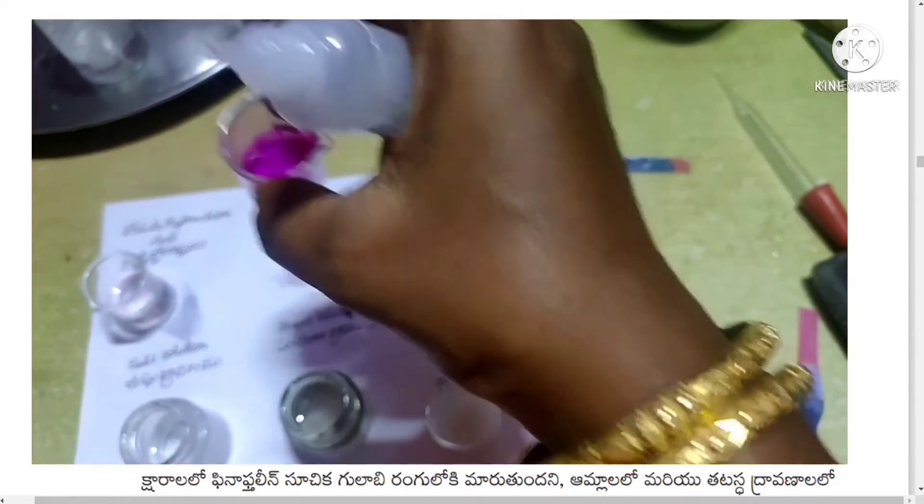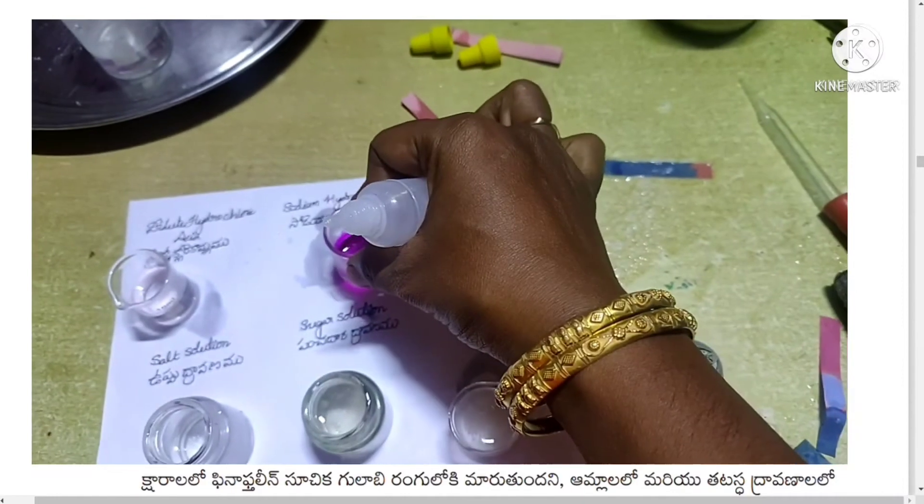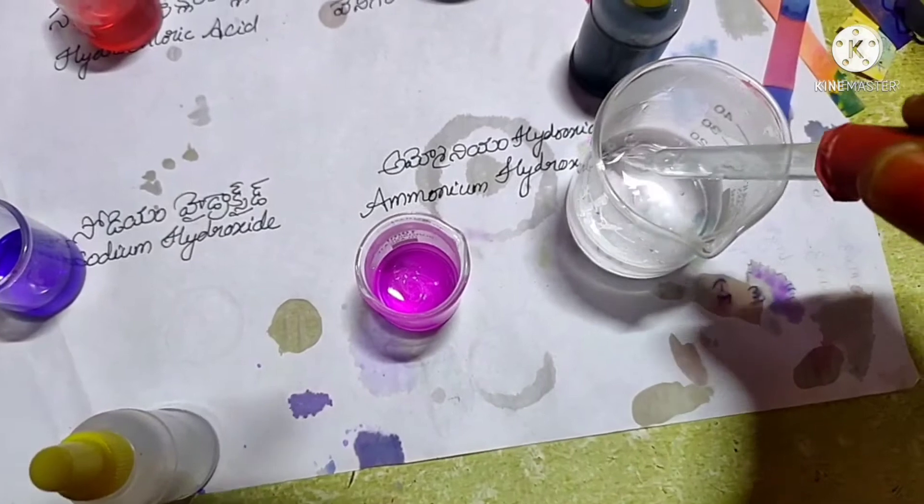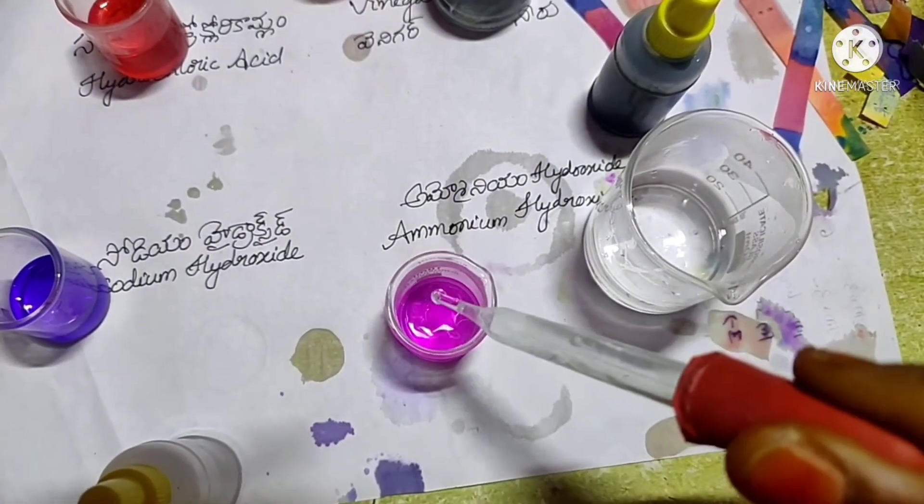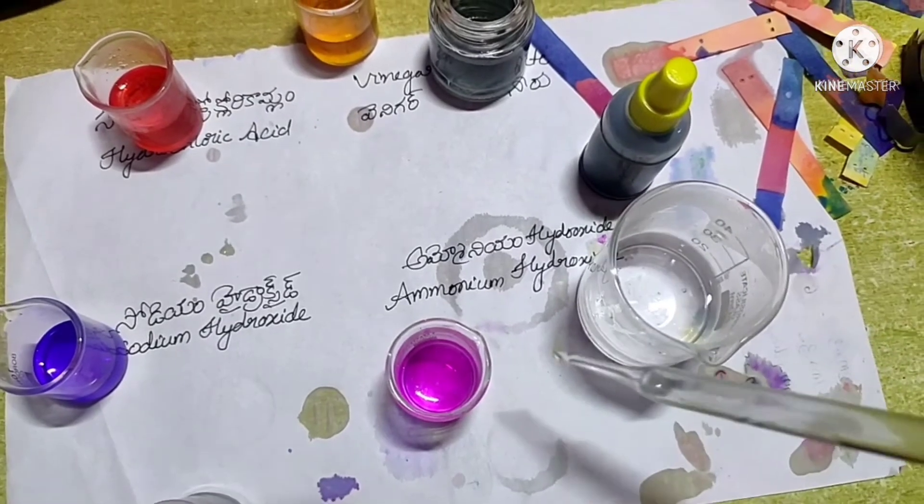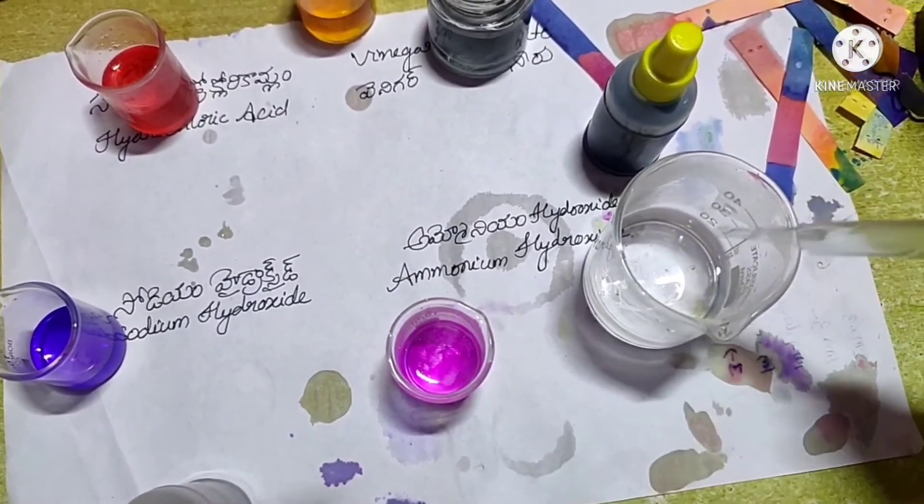Using a dropper, add dilute hydrochloric acid drop by drop to this solution and stir gently. Continue adding acid till the pink color disappears. Now the solution is no more basic, as it was neutralized by the acid.